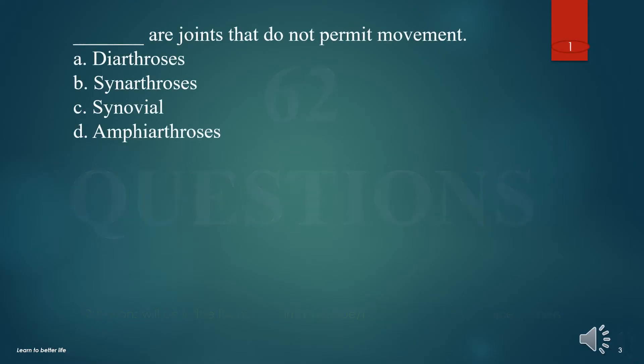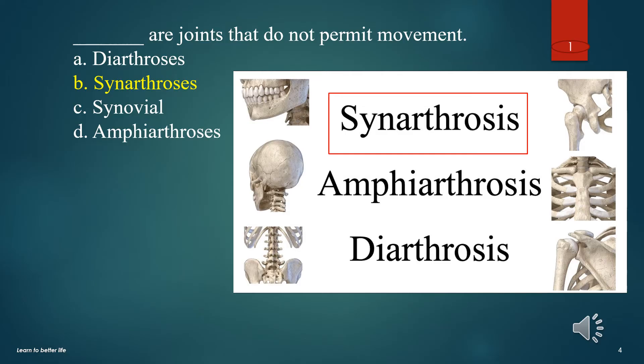What are joints that do not permit movement? A. Diarthroses. B. Synarthroses. C. Synovial. D. Amphiarthroses. The answer is B. Synarthroses.